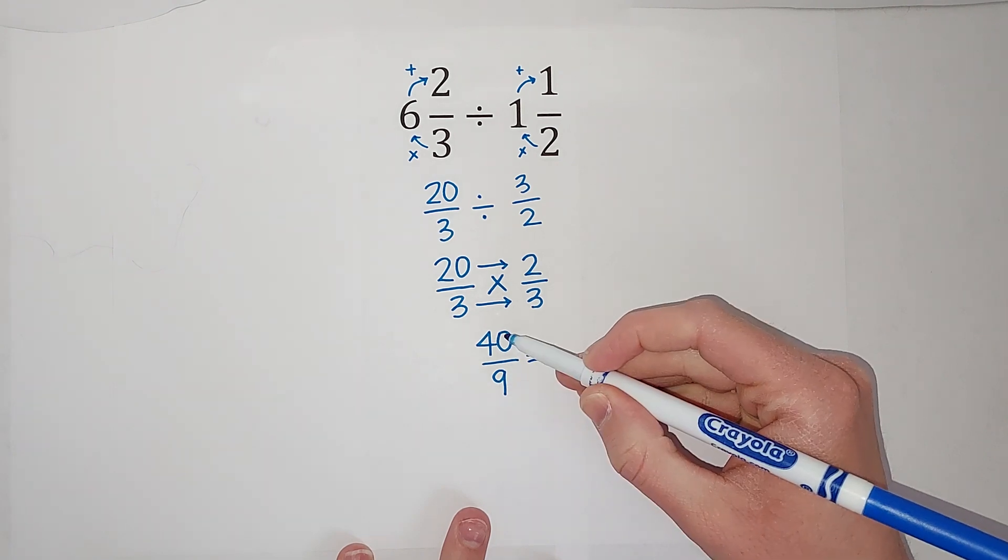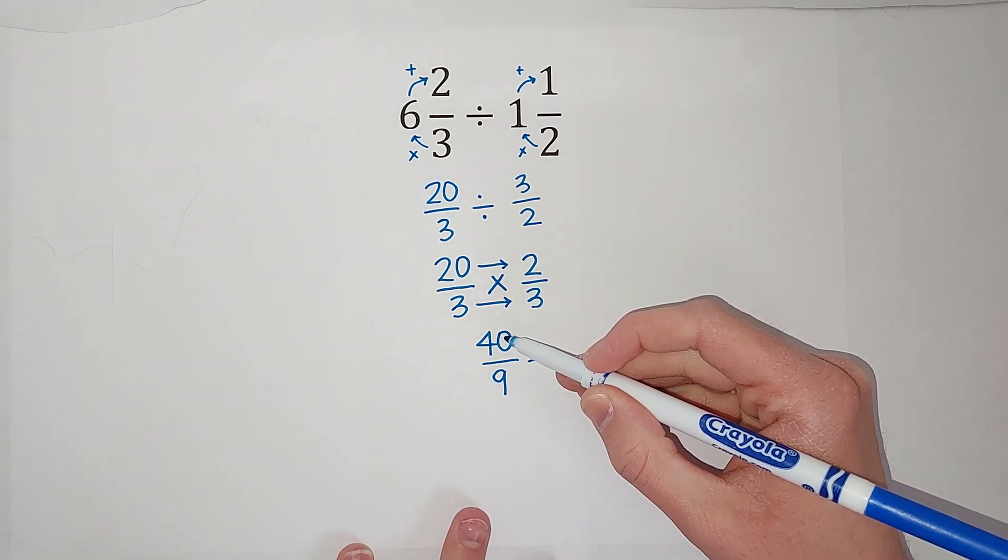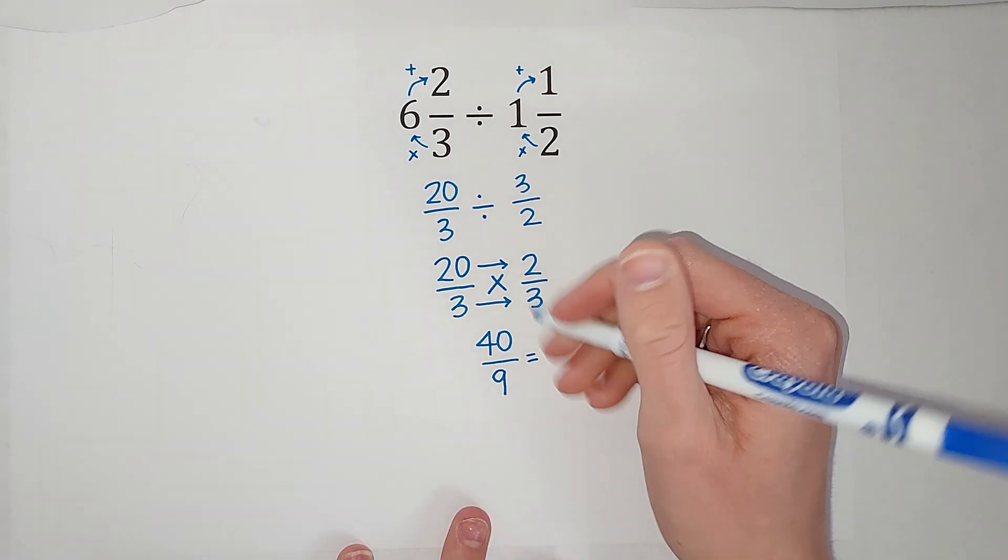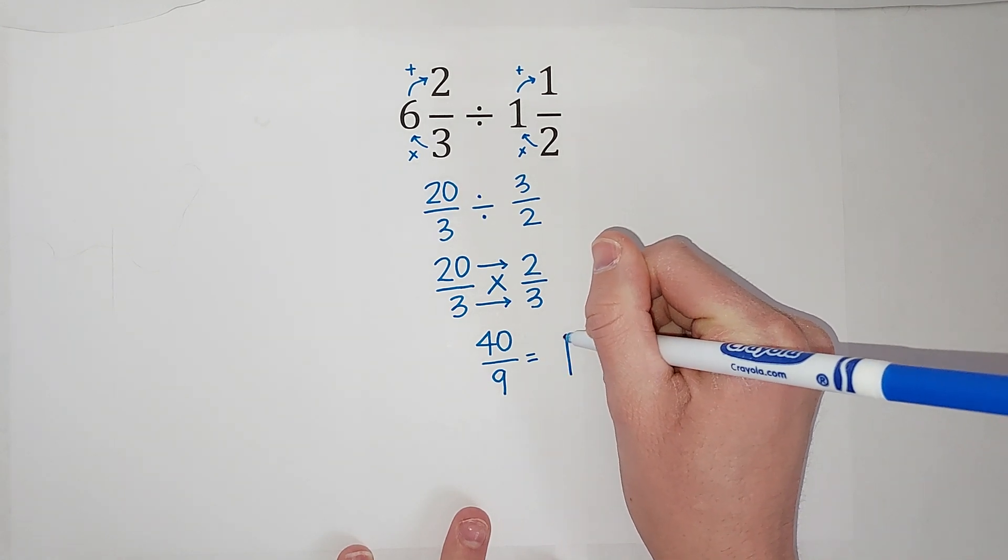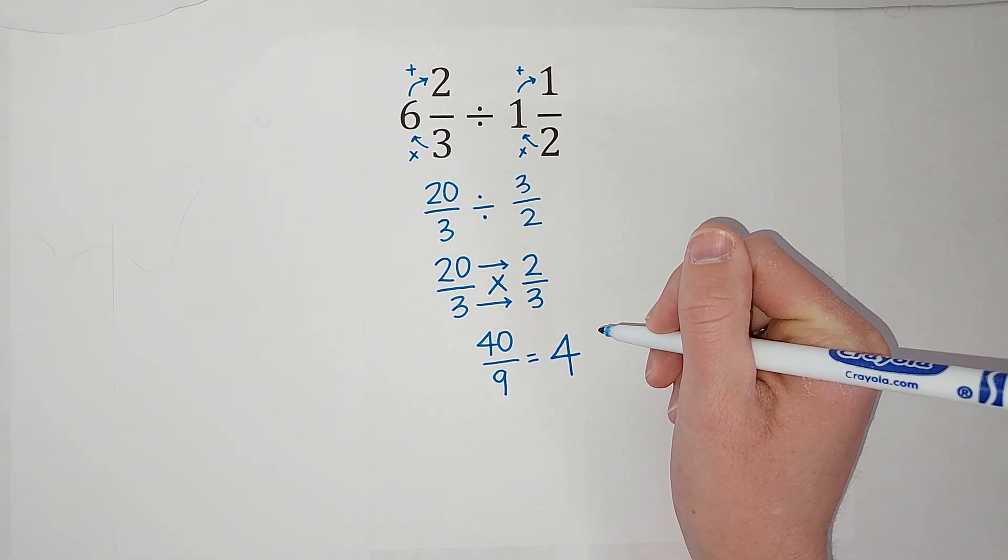So see, how many times does nine go into forty? Nine times four gives me thirty-six. So it goes in four times, but not evenly, right? There's some left over.